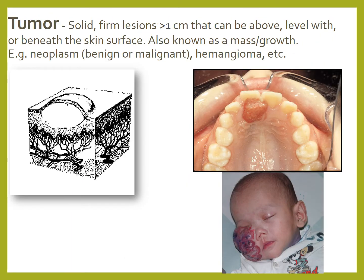A tumor, on the other hand, is a solid, firm lesion greater than 1 cm that can be above, level with, or beneath the skin surface — also known as a mass or growth. The word tumor doesn't necessarily indicate cancer; it could be benign or malignant, or even a hemangioma. Examples shown include a tumor inside the oral cavity and a tumor on the face of a child.